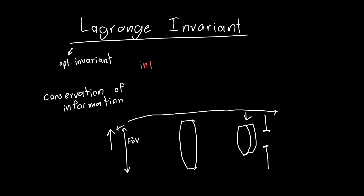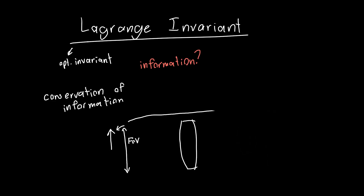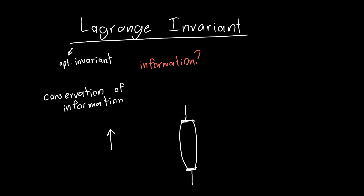The natural question becomes: how do we represent information in this context, and how do we write down an equation that gives us conservation of information? Let's simplify to a single lens system and say that the aperture stop is just at the first lens. We also have a field stop right behind it, limiting our field of view — and we need a finite field of view for the Lagrange invariant to make any sense.